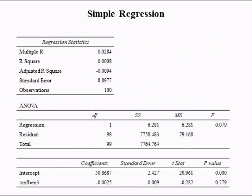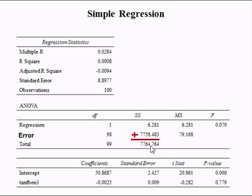This is what Excel outputs when you perform regression. The standard error of the estimate matches what we calculated previously. The output shows the sum of squares due to regression, due to error, and the total sum of squares. The total degrees of freedom equals the degrees of freedom for sum of squares due to error plus the degrees of freedom for sum of squares due to regression. The total sum of squares equals the sum of both components.